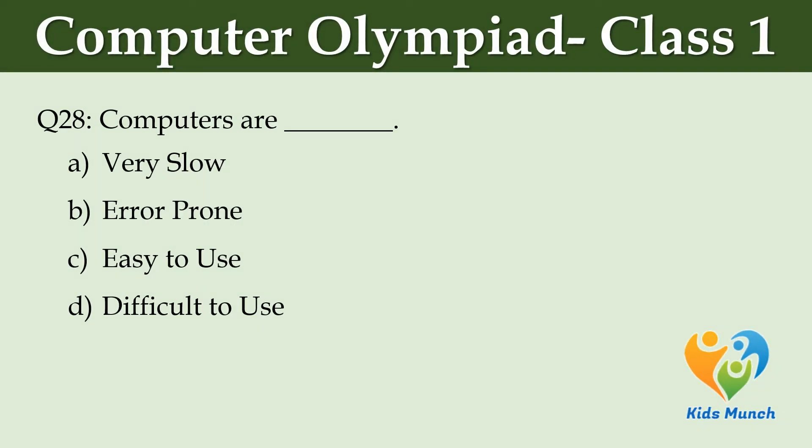Computers are dash. Option A: Very slow. Option B: Error prone. Option C: Easy to use. Option D: Difficult to use.